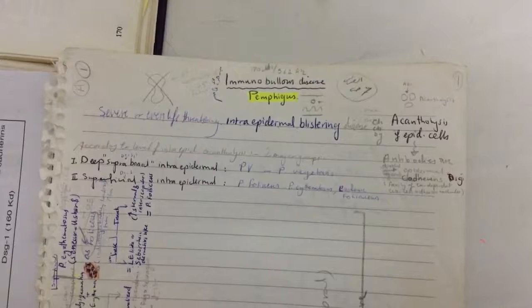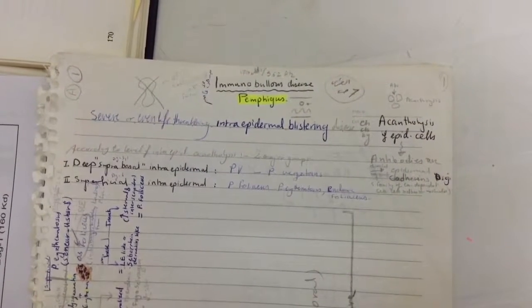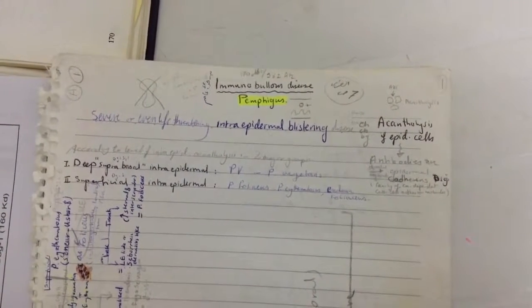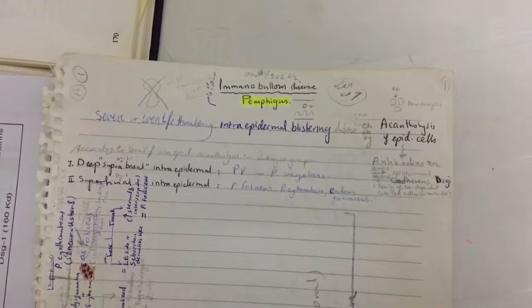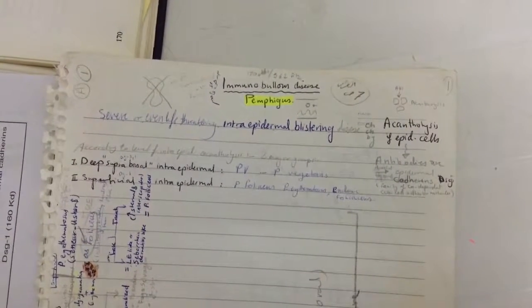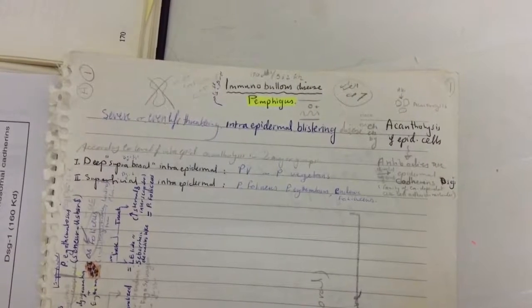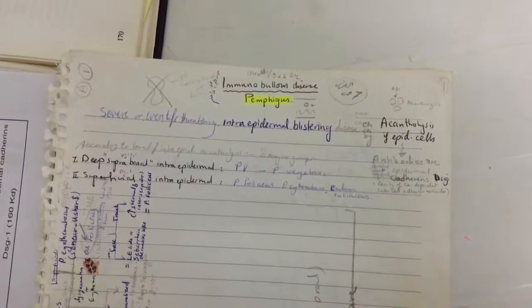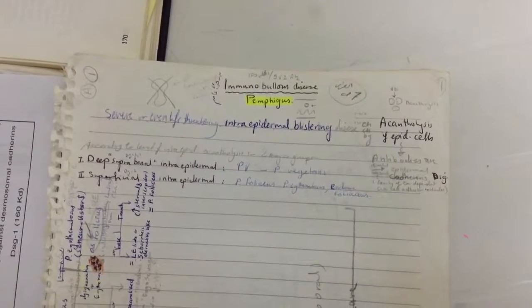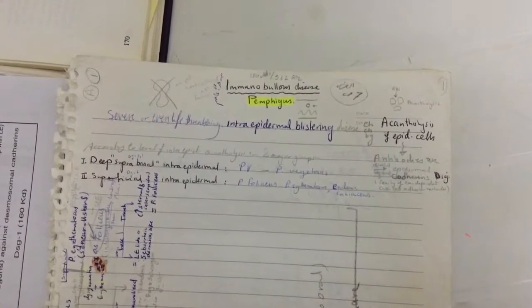Pemphigus is a severe or life-threatening intra-epidermal blistering disease characterized by acantholysis of epidermal cells. Antibodies are directed against epidermal cadherins — desmoglines — which are a family of calcium-dependent cell-to-cell adhesion molecules. According to the level of intra-epidermal acantholysis, there are two major groups: deep suprabasal intra-epidermal and superficial intra-epidermal.